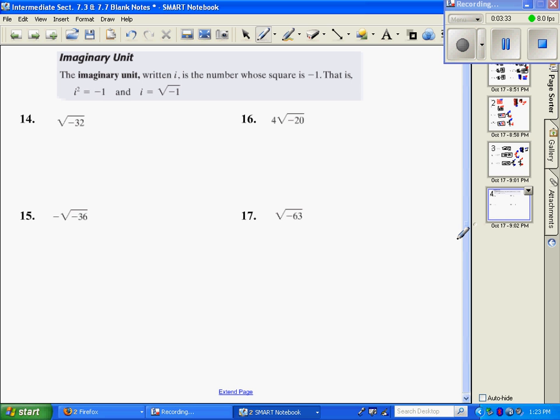Now we're going to be working with imaginary units, written i. It's a number whose square is negative 1. We have two properties we're looking at, i squared equals negative 1, or we also have the other form of it, i equals the square root of negative 1. Basically, when you have this...